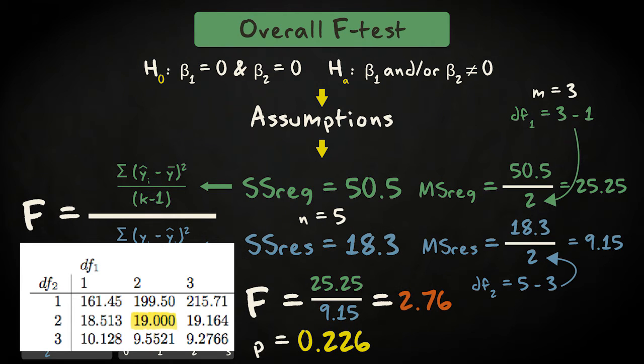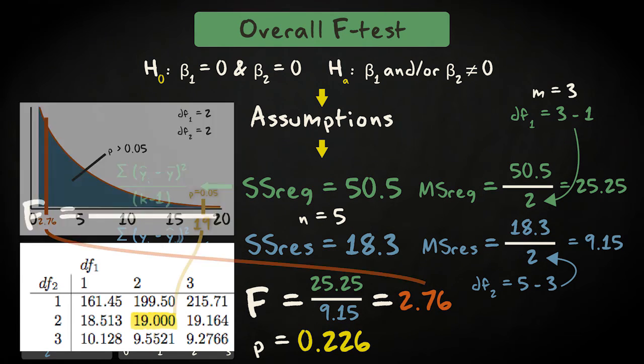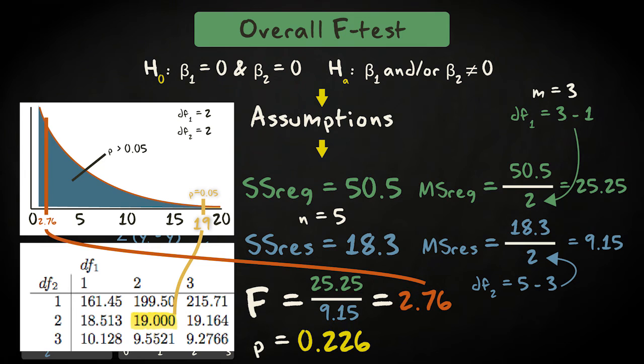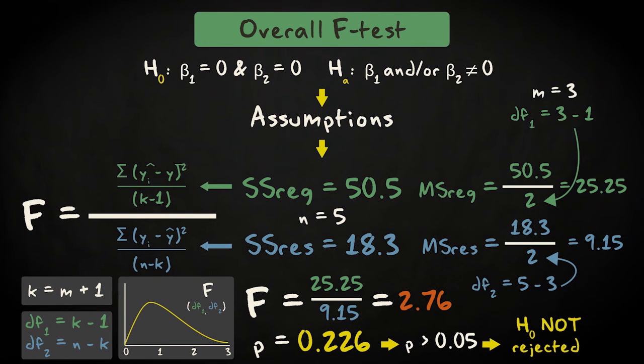If we use the table to look up the critical F-value, we see that our calculated value, 2.76, does not exceed the critical value of 19.000. This means that we cannot reject the null hypothesis and cannot conclude that cat age or hairiness or both are related to video popularity.